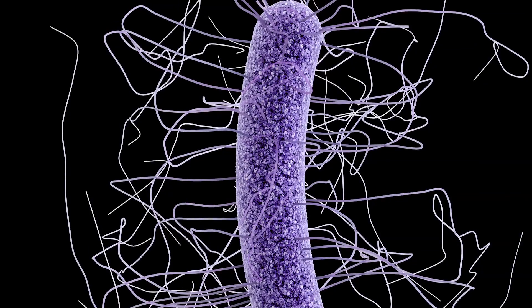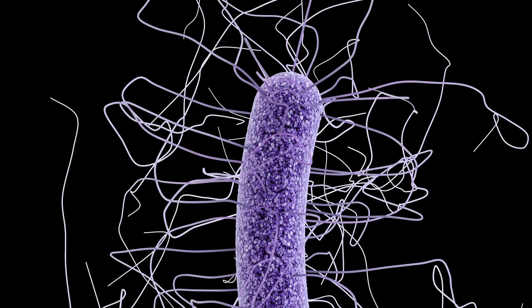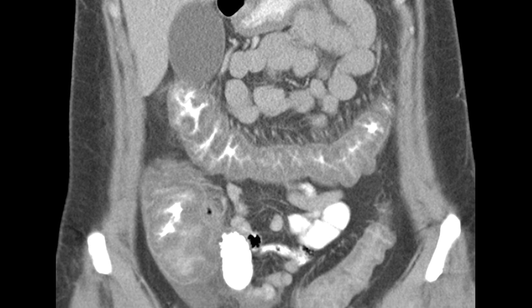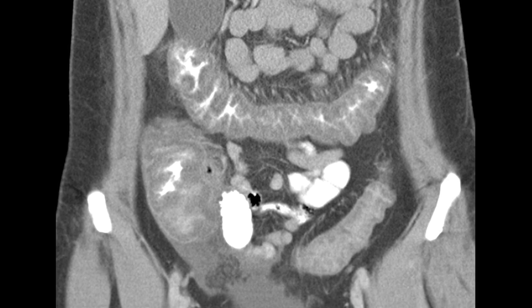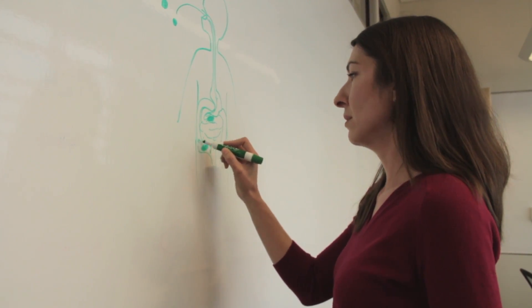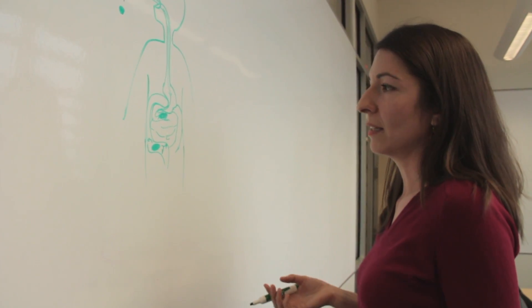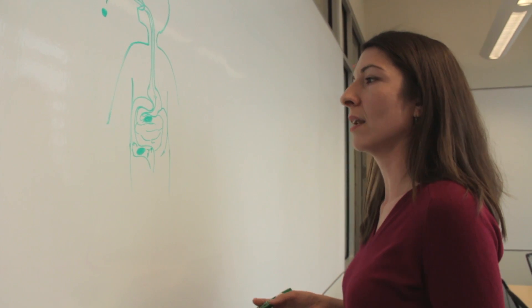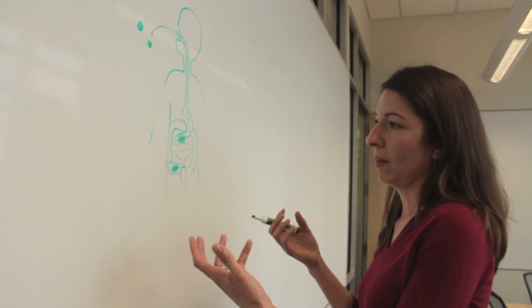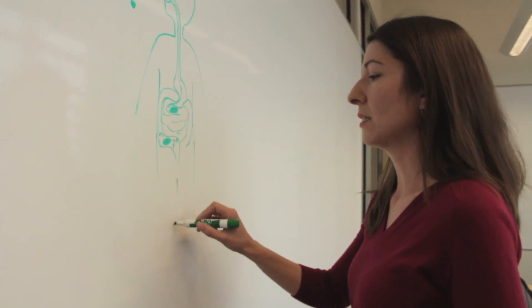C. difficile is an obligate anaerobe. That means the actively growing form of the bacteria are really sensitive to oxygen. They don't survive outside the body in the presence of oxygen. It doesn't do a good job of killing them off, but ultimately these bacteria end up in the large intestine, which is anaerobic, so there's no oxygen there to kill off these cells. This is where these bacteria start to produce toxins that basically kill off cells in the intestine. In that process, they damage the tissue, which leads to a lot of inflammation and also breaks up the barrier of the intestine so that there's leakage of fluids into the intestine, and that's what causes the diarrheal disease.